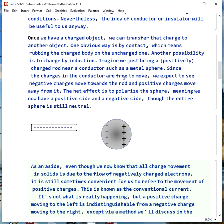Let's say we bring a positively charged rod near a conductor like a metal sphere. Since the charges in the conductor are free to move, we see the negative charges move towards the rod and positive charges are left behind. We'll say positive charges move away from it, even though really the positive charges are the nuclei and they're not allowed to move. The net effect is to polarize the sphere, meaning we now have a positive side and a negative side, even though the total charge on the sphere is still zero.